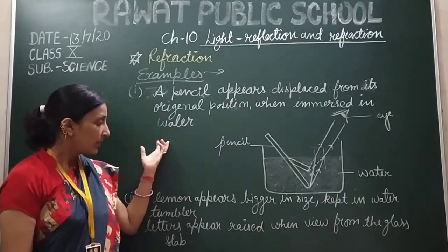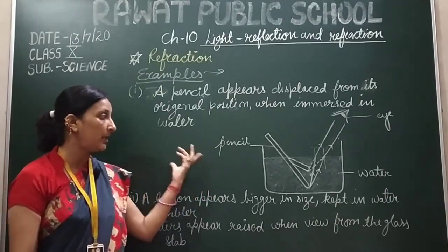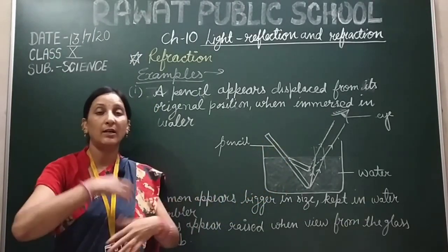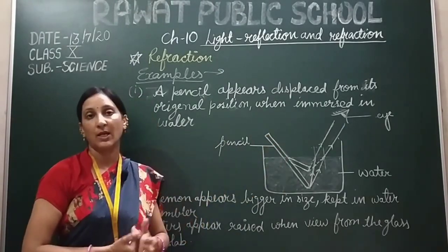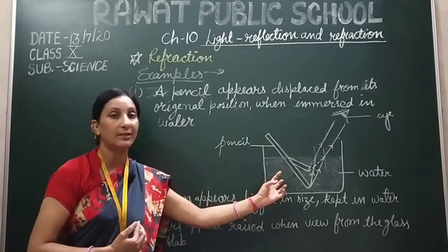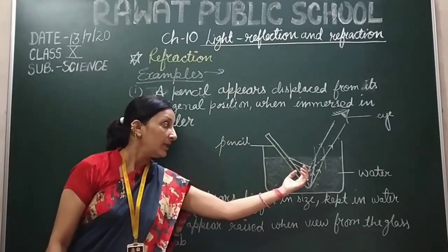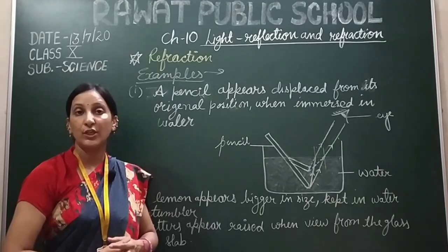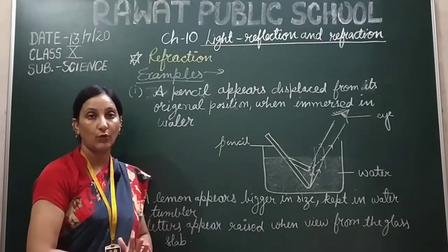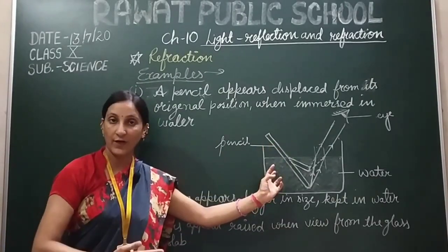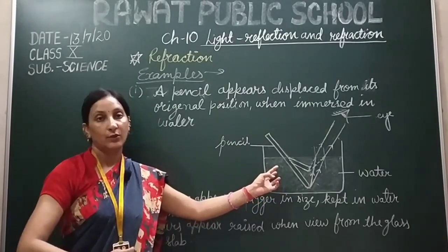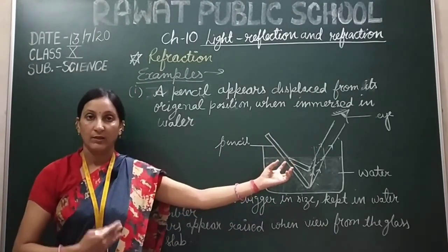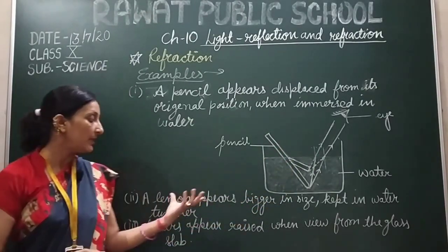We can take different pairs of media: air and water, air and turpentine oil, or air and kerosene oil. The extent of bending will not be the same as what we see in water compared to kerosene or turpentine oil, because in each case the pair of media is different. The speed of light will be different, so the direction will also be different. As we change the pair of media, the extent of bending also changes.